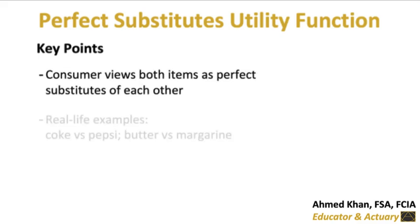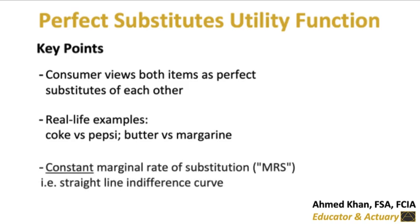Real-life examples could be Pepsi vs. Coke or Butter vs. Margarine. The main result of this substitutability is that the rate at which one item is willingly given up for another item in order to maintain the same level of utility is constant. In other words, the marginal rate of substitution is constant.